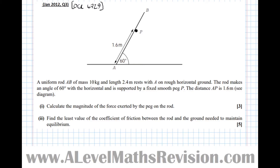The question says a uniform rod AB of mass 10 kilograms and length 2.4 meters rests with A on rough horizontal ground — and that implies there's going to be friction. The rod makes an angle of 60 degrees with the horizontal as shown in the diagram, and is supported by a fixed smooth peg P. The distance AP is 1.6 meters.